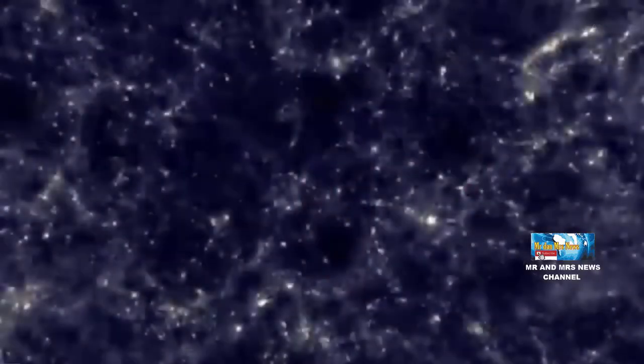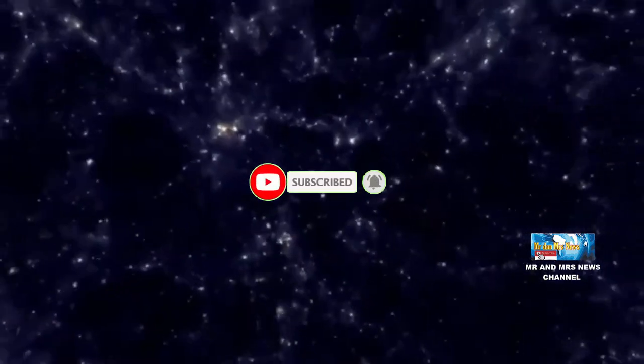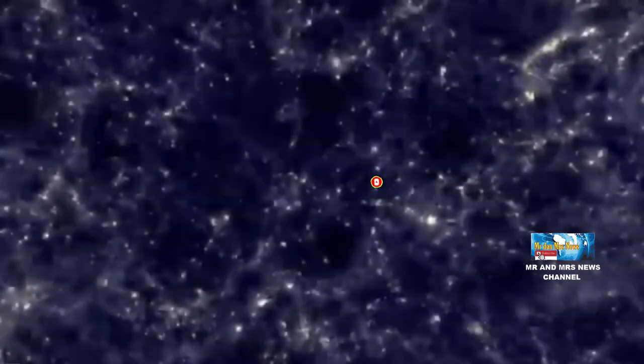Sementara eksoplanet di dekat galaksi spiral Messier itu berjarak 28 juta tahun cahaya yang berarti ribuan kali lebih jauh daripada yang ada di Bimasakti.